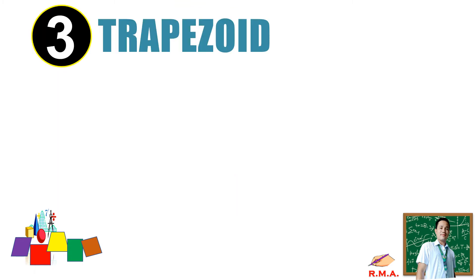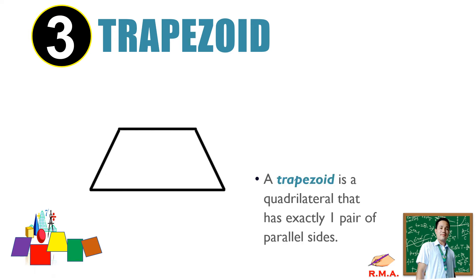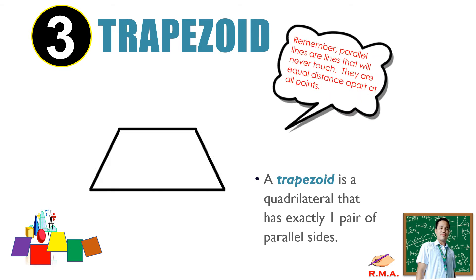How about number three? We have the trapezoid. A trapezoid is a quadrilateral that has exactly one pair of parallel sides. Remember, parallel lines are lines that will never touch — they are equal distance apart at all points. As we can see in a trapezoid, we have exactly one pair of parallel sides.